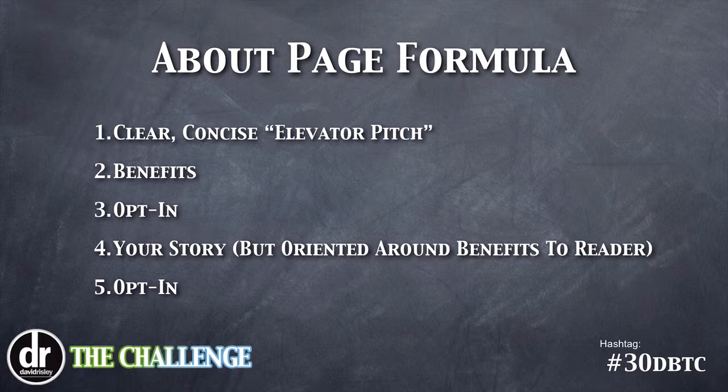Keep it relevant to your reader — they don't need to know everything about your life. After the story, you have a natural stop point, so include another opt-in there. That's step five of the about page formula, and it's going to work a lot better than what most people do, which is just talking all about themselves.